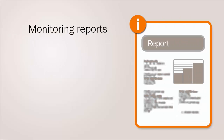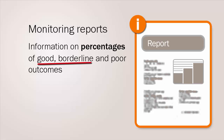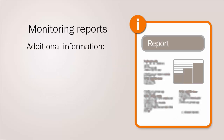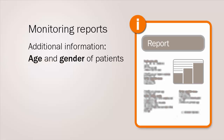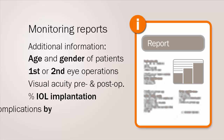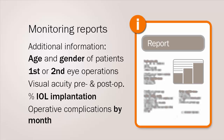Monitoring reports provide direct information on the percentage of good, borderline, and poor outcomes and also on the causes of poor outcomes at discharge and follow-up. Additional information can also be gained on the age and gender of patients, first or second eye operations, visual acuity pre and postoperatively — which can be used to understand the sight restoration rate — the percentage of IOL implantations, and operative complications by month. This is important for infection control.